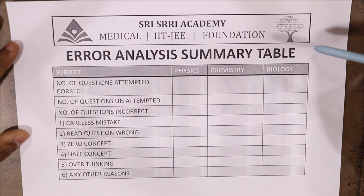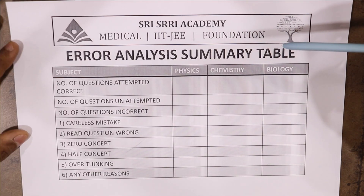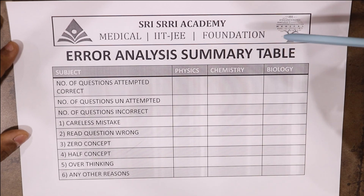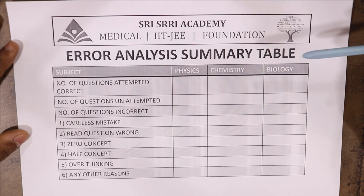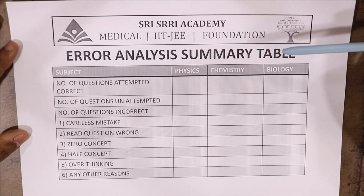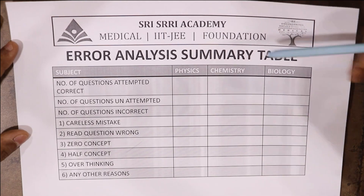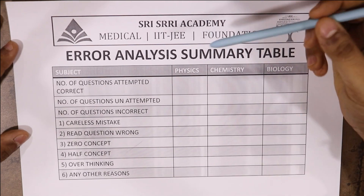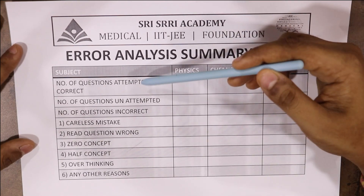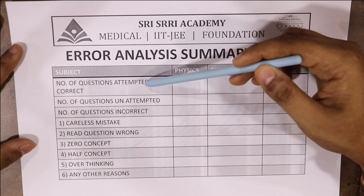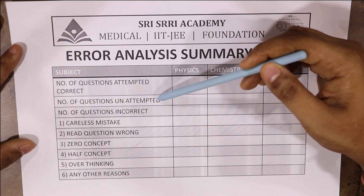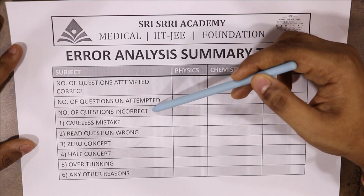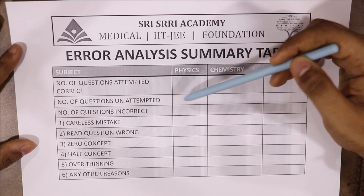The next thing you need to do is a summary table for error analysis. This is a simple table for physics, chemistry, and biology for NEET — and if you are doing JEE, you can replace biology with math. You have a row for number of questions attempted correctly, then number of unattempted questions, and then the incorrect questions that you attempted and got wrong.